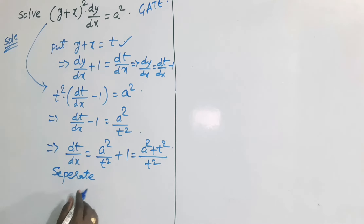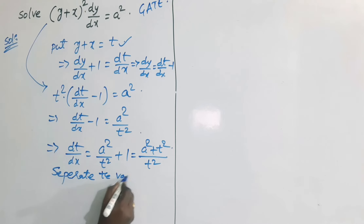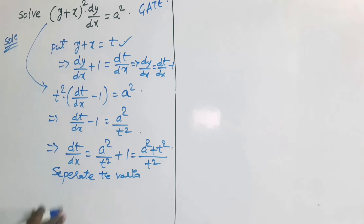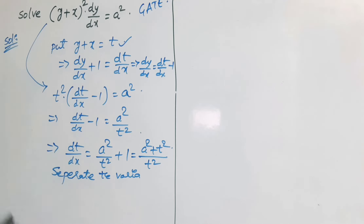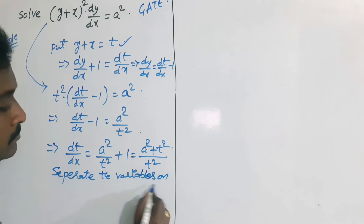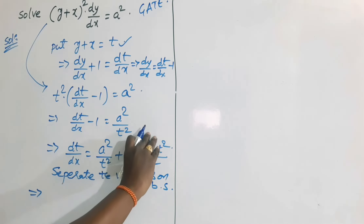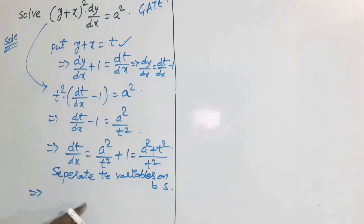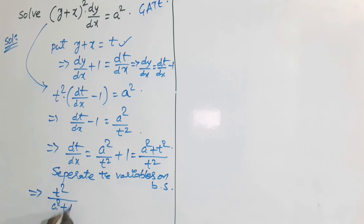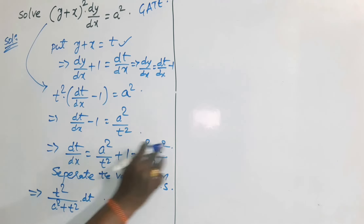Now clearly separate the variables on both sides. All terms of x and dx go to one side, and all terms of t and dt go to the other side. So we get t²/(a² + t²) dt = dx.